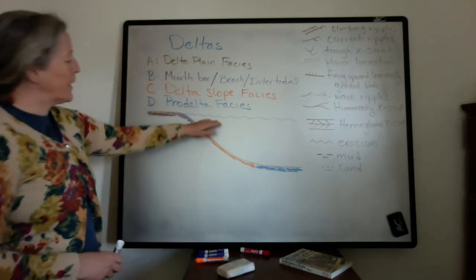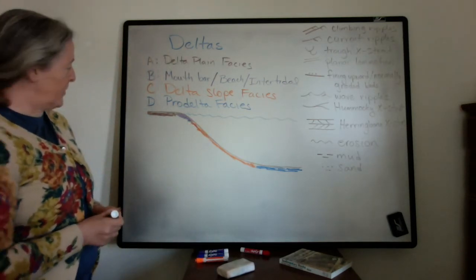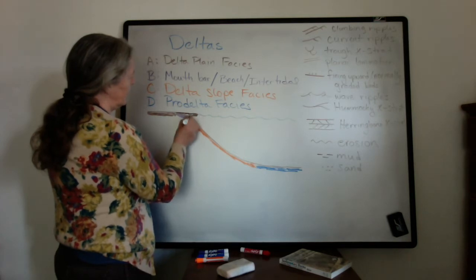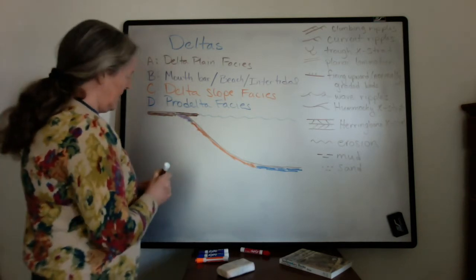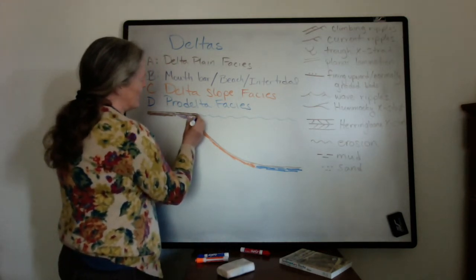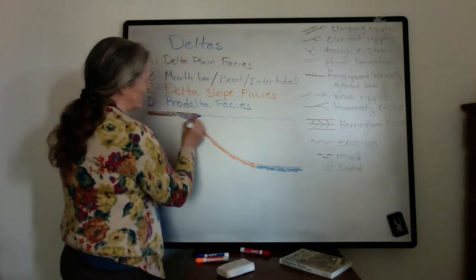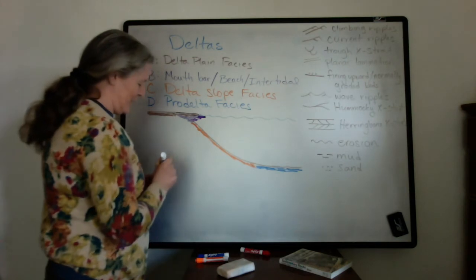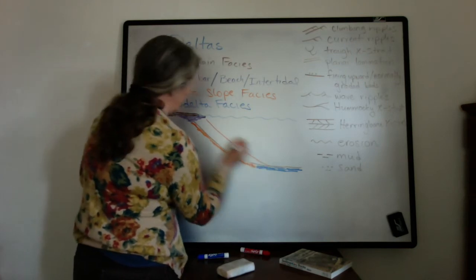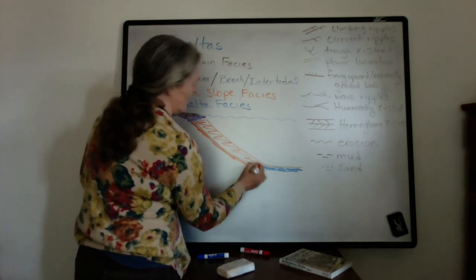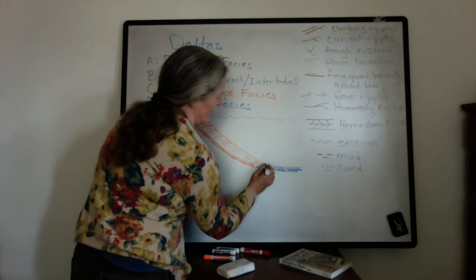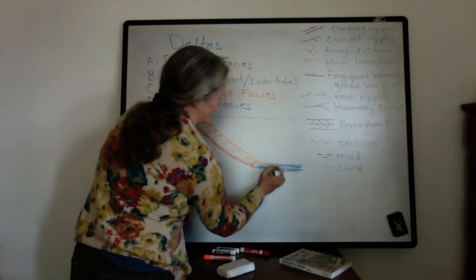So if we keep the water level the same, what happens through time is that the delta plane extends out and it doesn't extend out into the water itself. It's deposited on something, and so basically the mouth bar shoreline facies extend out and the slope facies extend out. Like this. And the pro-delta facies just advance further into the shore.